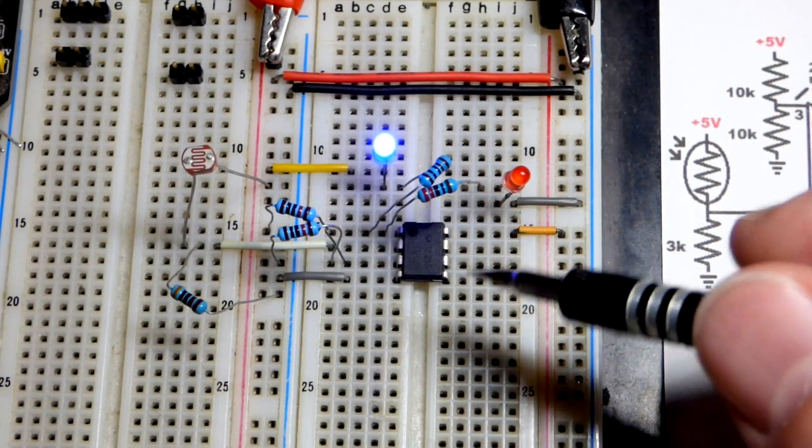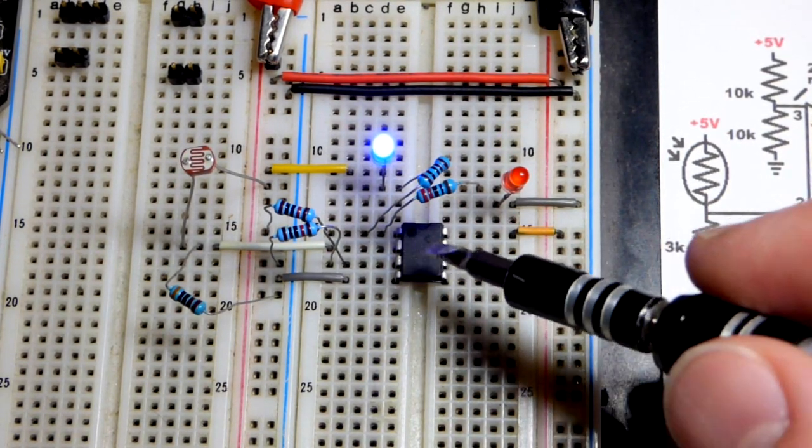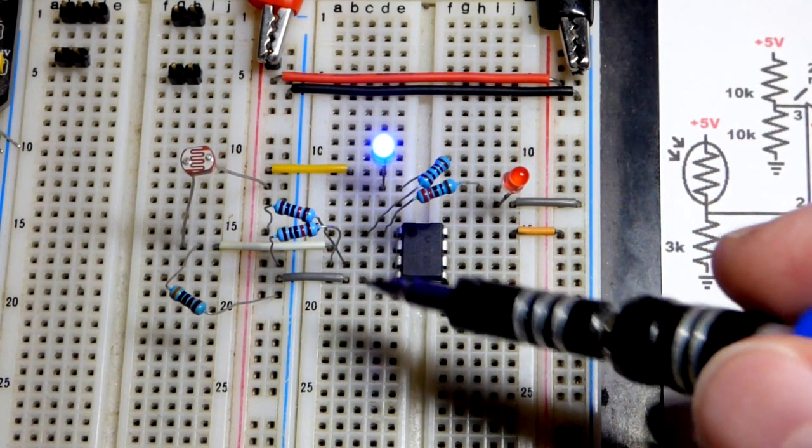In this video we have another comparator circuit using an op-amp, the LM358. It's an inverted comparator.